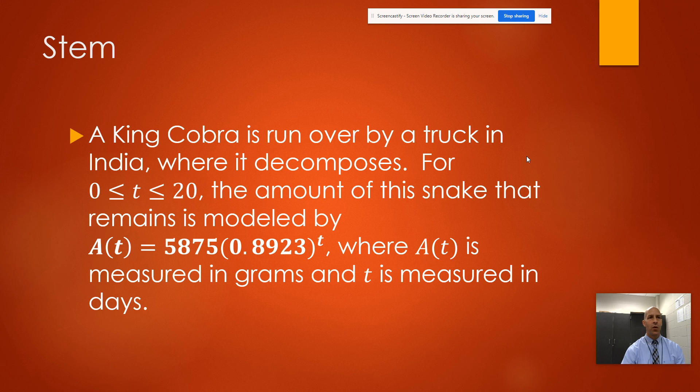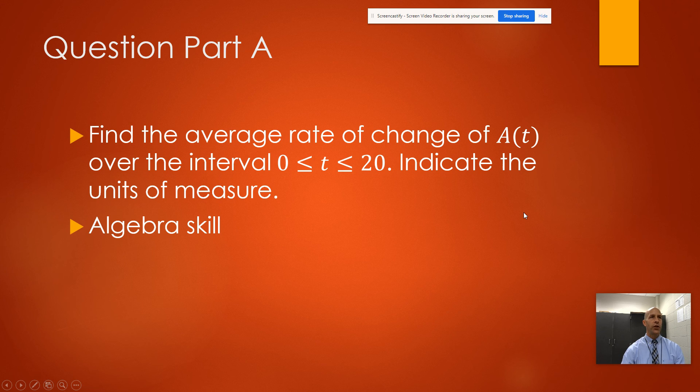For question part A, find the average rate of change of A(t) over the interval from 0 to 20 and indicate the units of measure. This is just an algebra skill. Whenever we're looking for average rate of change, we're basically going to use our slope formula, which is f(b) minus f(a) over b minus a.